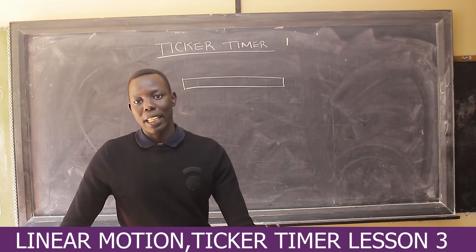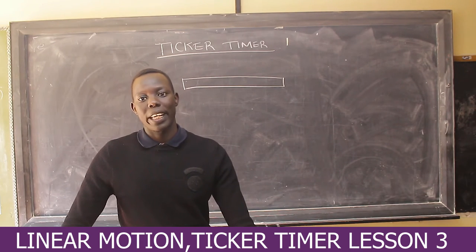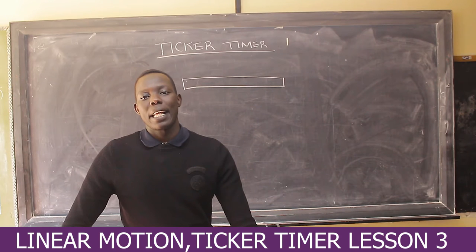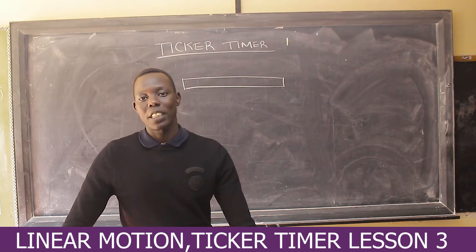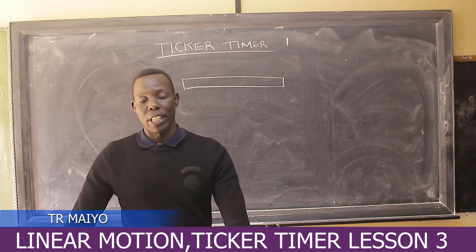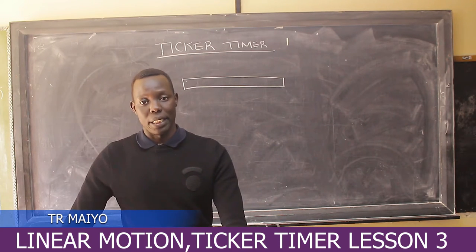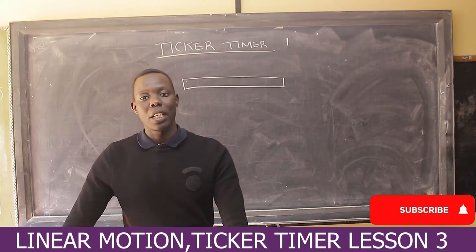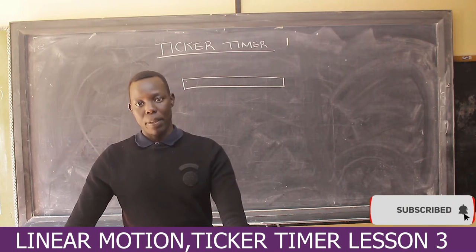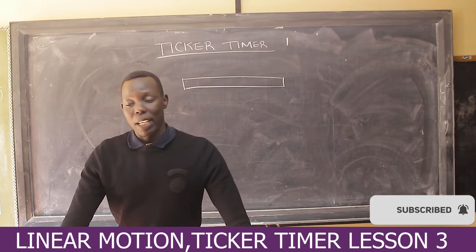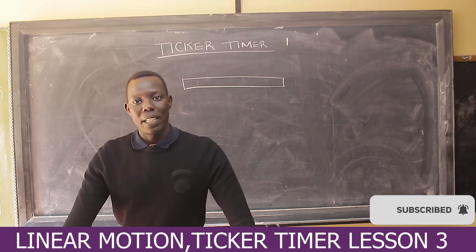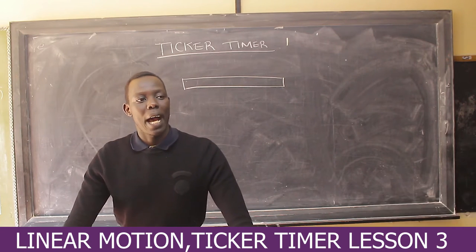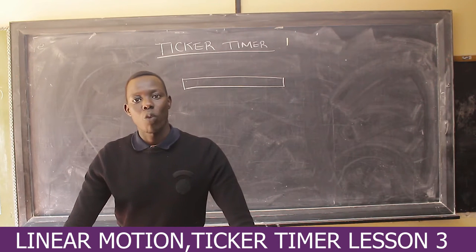We have a trolley — or any other object — that pulls the tape. The dots on the tape tell us the speed of that particular object. If the dots are equally spaced, the object was moving with constant velocity. If the spaces between dots keep varying, the velocity was varying with time. We have different types of ticker timers based on their frequencies; the most common ones have frequencies of 50 Hz and 100 Hz.